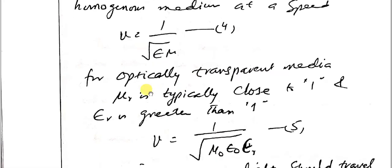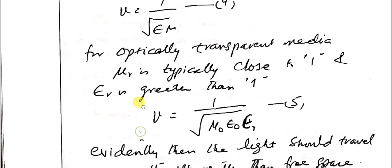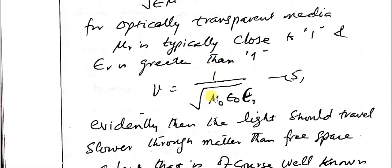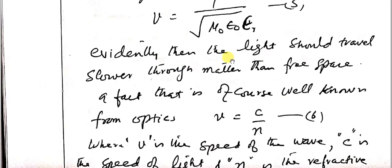For optically transparent medium, the mu r is typically close to one and epsilon r is greater than one. So we have V equals one over square root of mu naught epsilon r, epsilon naught. This is equation number five. Evidently, then the light should travel slower through the matter than the free space, a fact that is, of course, well known from optics.